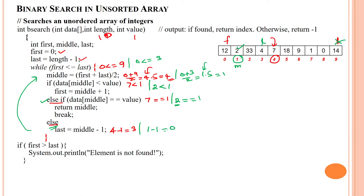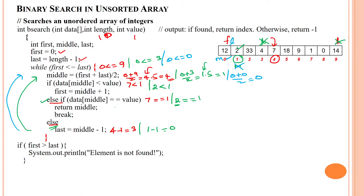We update last index with middle minus 1: middle is 1, so 1 minus 1 equals 0. New last index is 0. Going back to the loop: first 0 is less than or equal to last 0 — true. Calculating middle: 0 plus 0 divided by 2 is 0. New middle index is 0. Data of middle is 12.